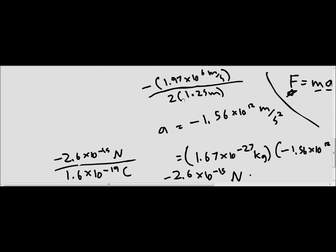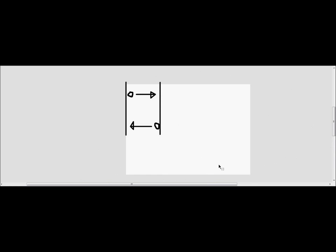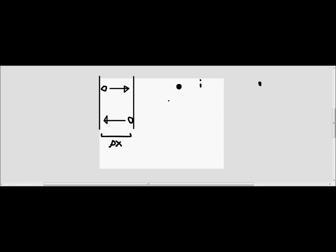So I hope that made sense. Now we're going to move on to number nine. In problem nine we're told that there are two parallel metal plates that are a certain distance apart and they have a uniform electric field. A uniform electric field is a field that does not change as distance increases — unlike a point charge where the field gets weaker further away, in a uniform field it stays the same no matter what distance you are from the plate.